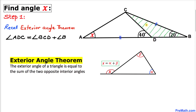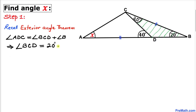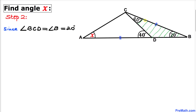Now let's focus on triangle BCD. We can see that 40 degrees is our exterior angle, and it equals the sum of the two opposite interior angles. Since angle B is 20 degrees, this means angle BCD must also be 20 degrees.